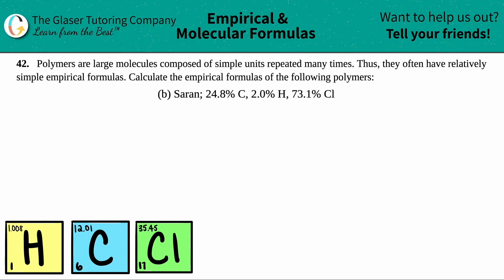Number 42. Polymers are large molecules composed of simple units repeated many times. Thus, they often have relatively simple empirical formulas. Calculate the empirical formulas of the following polymers, and then we have letter B.